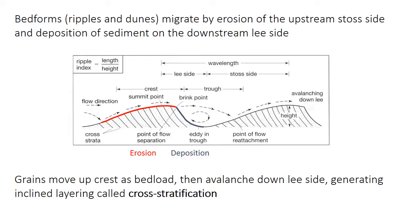Those grain avalanches produce steeply inclined layering called cross-stratification, or cross-strata — you'll sometimes hear it referred to as cross-lamination or cross-bedding. One important point is that the cross-stratification is produced at the lee face, shown as the dark blue line on the diagram, but it immediately starts to be eroded as the crest and the upstream part of the bed form migrates over that point.